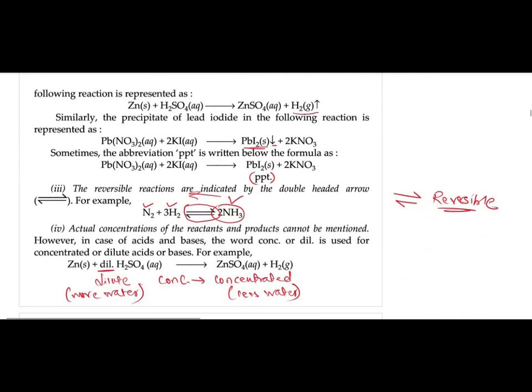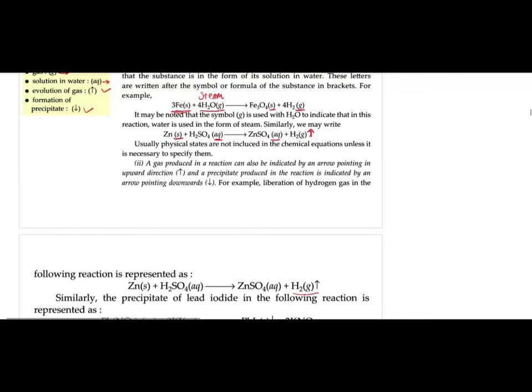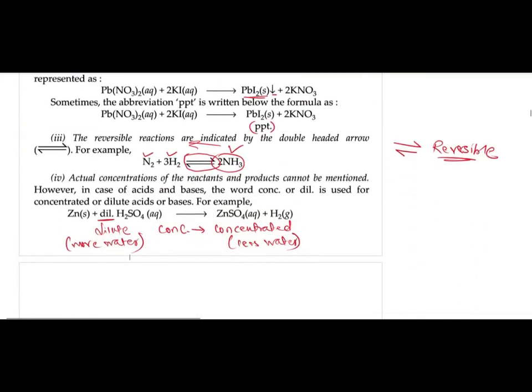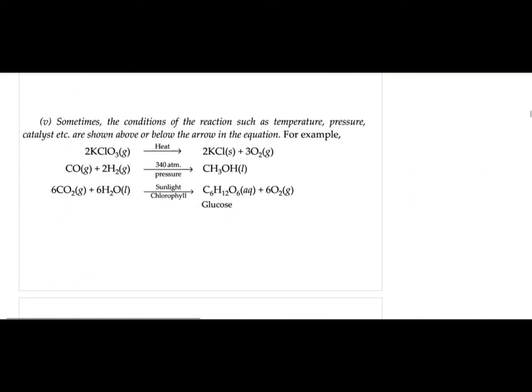Sometimes the conditions of the reaction, such as temperature, pressure, and catalyst, are also shown above or below the arrow in the equation.